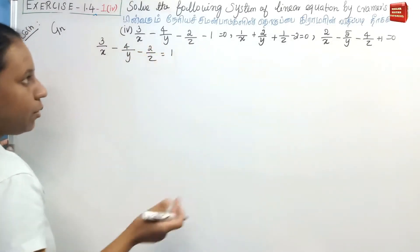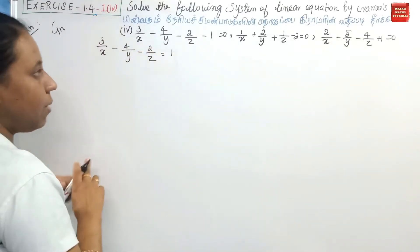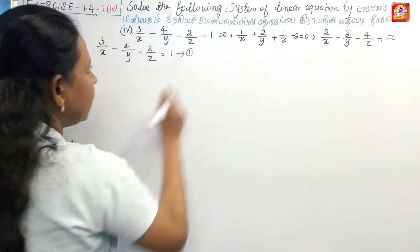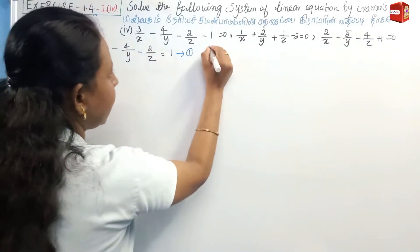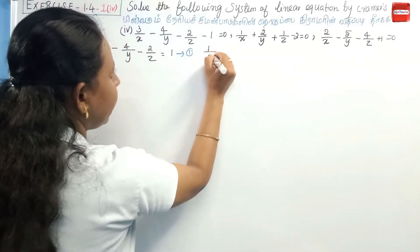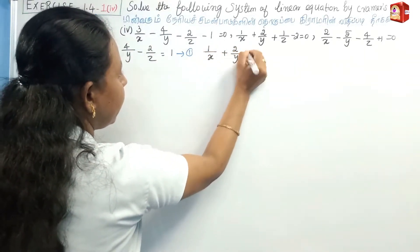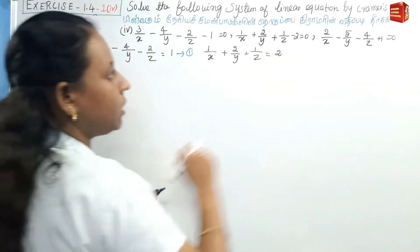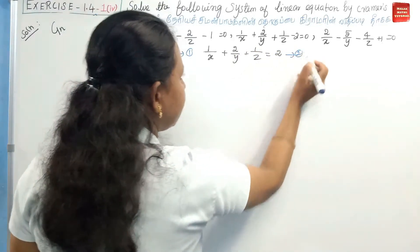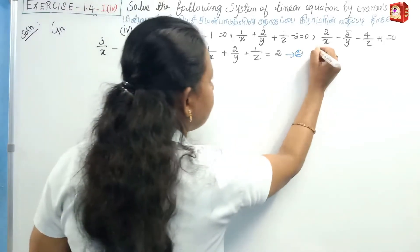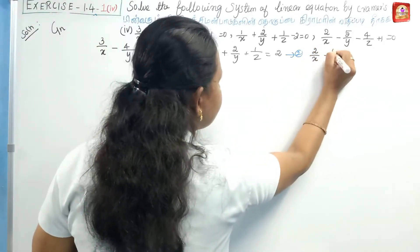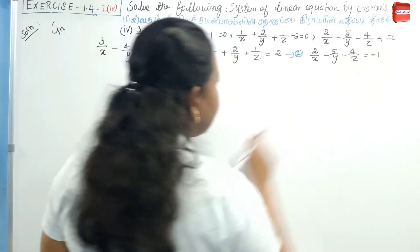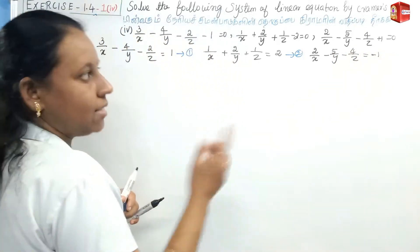Let's write the equations. Equation 1: 1/x + 2/y + 1/z = 2, that is the right-hand side is 2. This is equation number 2: 1/x + 2/y + 1/z = −2. Equation 3 will be: 2/x − 5/y − 4/z = −1, with the right-hand side being −1.